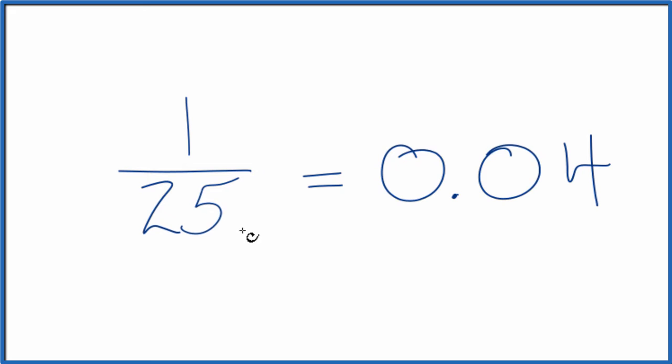So the fraction 1 over 25 equals the decimal 0.04, and these are equivalent. They're written differently, but they represent the same value.